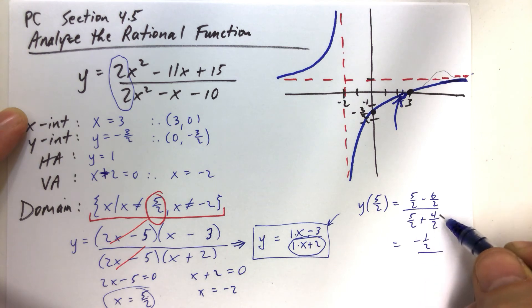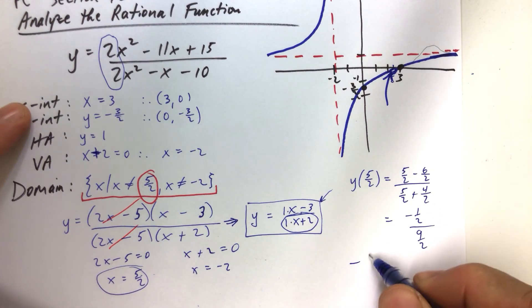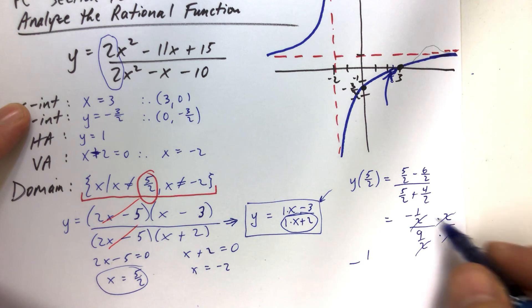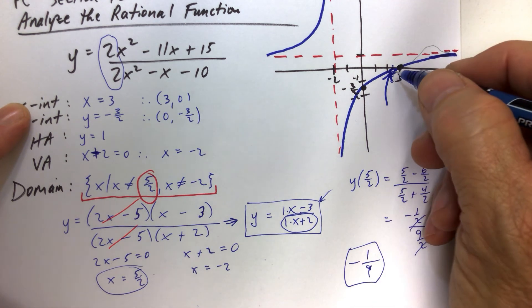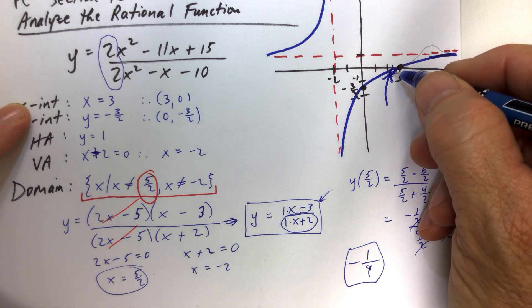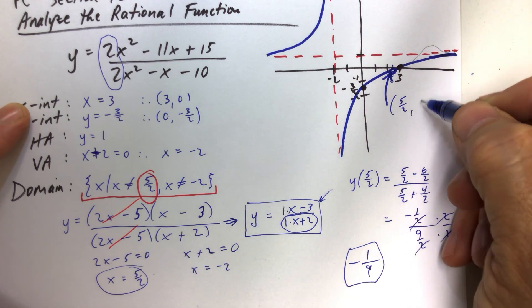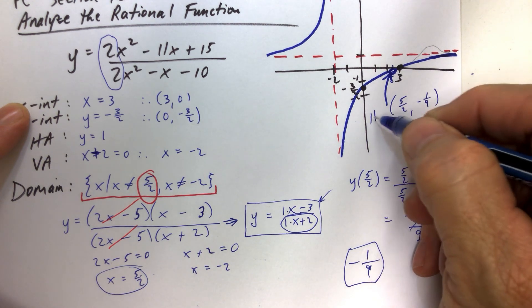The denominator is 5 halves plus 4 halves, that's 9 halves. So now that gets a little tricky. Easiest way would just be to multiply top and bottom by 2, and the 2's go away. So we get negative 1 over 9. So negative 1 over 9 is the y-coordinate, and that fits with the way we drew our graph. And so the hole would have coordinates 5 halves, comma, negative 1 ninth, and that's where the hole is.